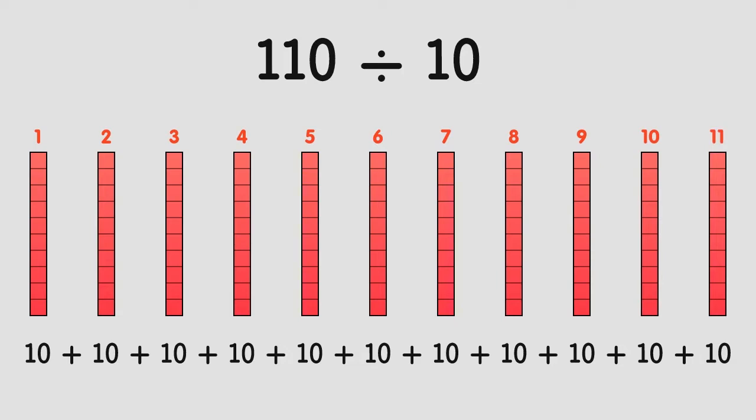This is our solution: if we have 110 and we divide it into groups of 10, we end up with 11 groups.